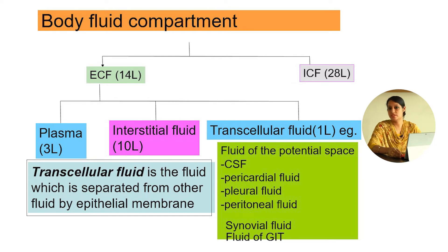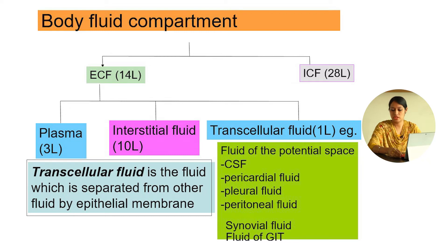What is transcellular fluid? Transcellular fluid is the fluid which is separated from one fluid compartment by an epithelial membrane. Examples of transcellular fluids are fluids in the potential spaces, that is CSF, pericardial fluid, peritoneal fluid, pleural fluid, synovial fluids, and fluids in the GIT.